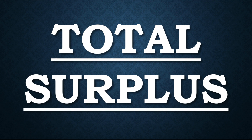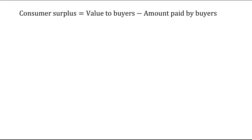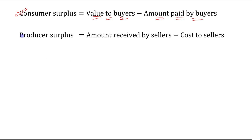Hello students, the next topic is total surplus. We have already studied that consumer surplus is value to buyers minus amount paid by buyers, and producer surplus is equal to amount received by sellers minus cost to sellers.